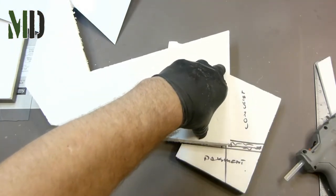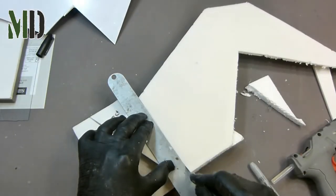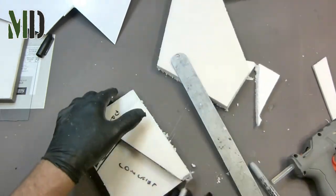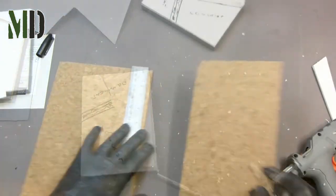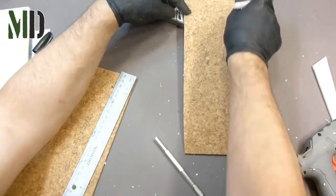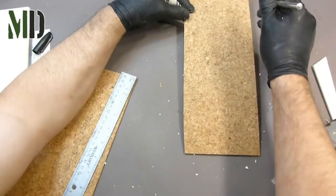I start measuring out the foam to do the raised area of the tarmac. Once it's cut out, I fix it to the base using a hot glue gun, and then just trim it down, getting the edges nice and straight. And then for the concrete area where the bins will be, I'm going to use cork board.